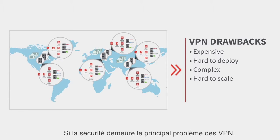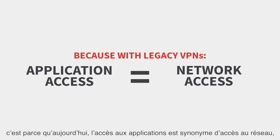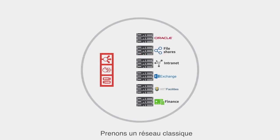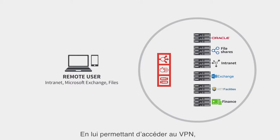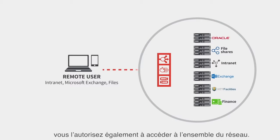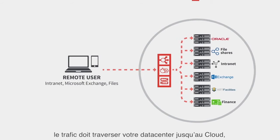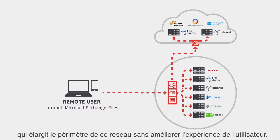But the biggest issue with VPNs remains security, because today's application access is really network access, and it's caused some big security breaches in the last few years. Take a typical network: you have a remote user that needs to get access to standard business apps in your data center. You give them VPN access, but you've also given them access to your entire network. If you've provisioned applications in the cloud, the traffic has to go through your data center and then up to the cloud in a site-to-site VPN tunnel, which expands that network perimeter further and doesn't do anything good for the user experience.